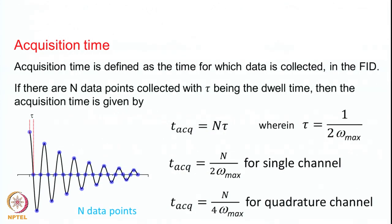The next parameter is the acquisition time — how much data you collect. Acquisition time is defined as the time for which data is collected in the FID. The FID starts here and you collect data all the way until the signal has decayed. Beyond that point there will be no signal, mostly just noise. You do not want to collect noise, so you are limited by the relaxation of the signals. The acquisition time is dictated by the transverse relaxation time T2 of your spin system — by about 3 times T2 the signal has decayed almost to zero.